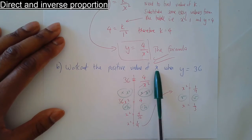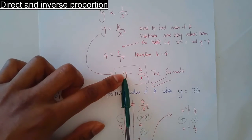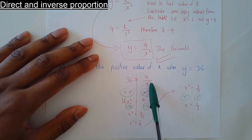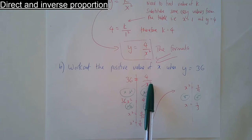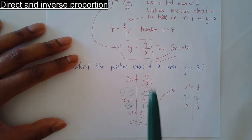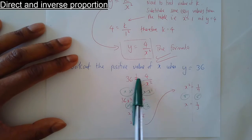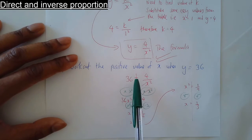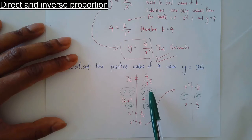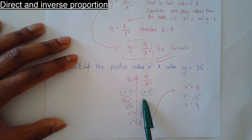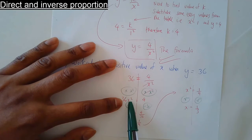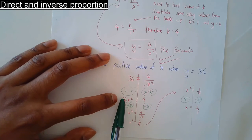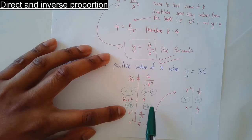Find the value of x when y is equal to 36. Replace y with 36 and solve the equation. Because x is in the denominator, I'd prefer it on its own on the numerator. To get rid of the divide by x squared, do the inverse operation and multiply both sides by x squared.